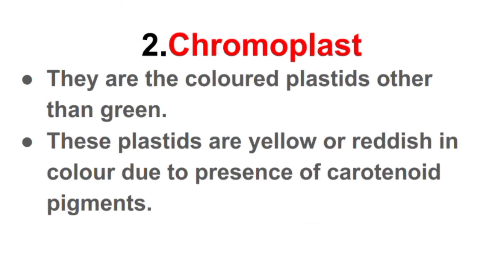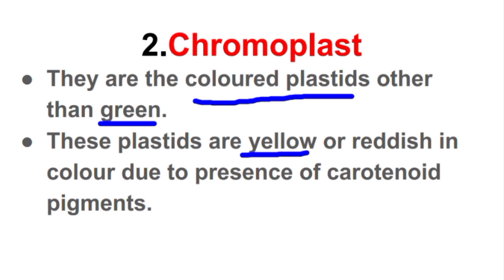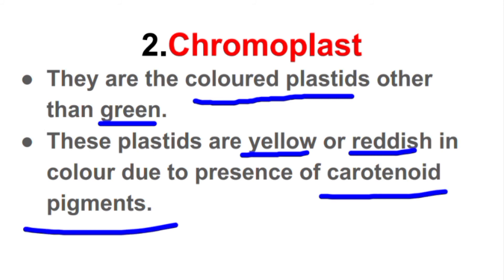Chromoplasts are coloured plastids other than green. These are plastids that are coloured but not green. They can be yellow or reddish in colour due to the presence of carotenoid pigments.